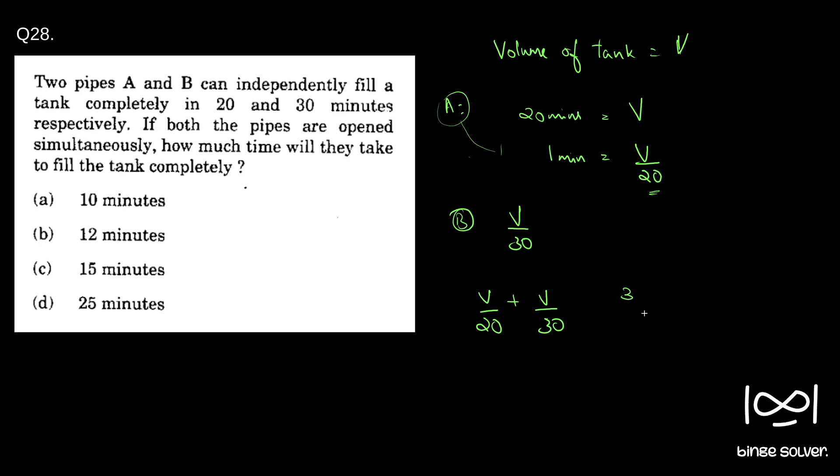Sorry. You multiply both side by, 3V by 60 plus 2V by 60, which is 5V by 60. Or if you cut, we get V by 12.